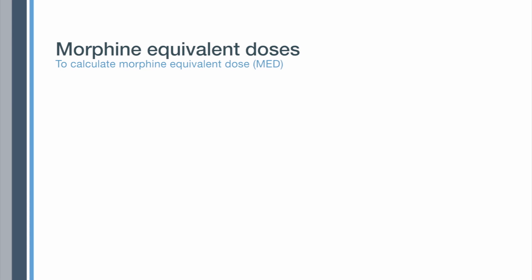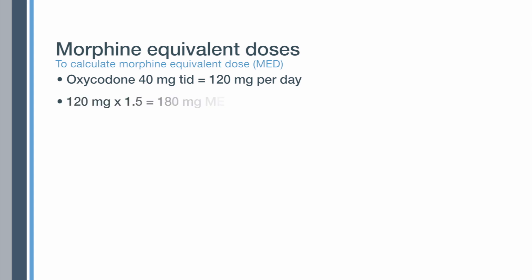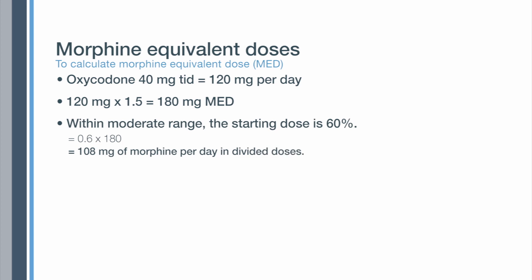For example, let's walk through this calculation. A patient is taking oxycodone 40 milligrams three times a day, which works out to a total dose of 120 milligrams per day. To calculate the morphine equivalent dose, look up the conversion table. The conversion factor is 1.5, giving 180 milligrams of morphine equivalent dose per day. Within the moderate range, therefore, the starting dose is 60%, which equals 108 milligrams of morphine per day, given in divided doses.